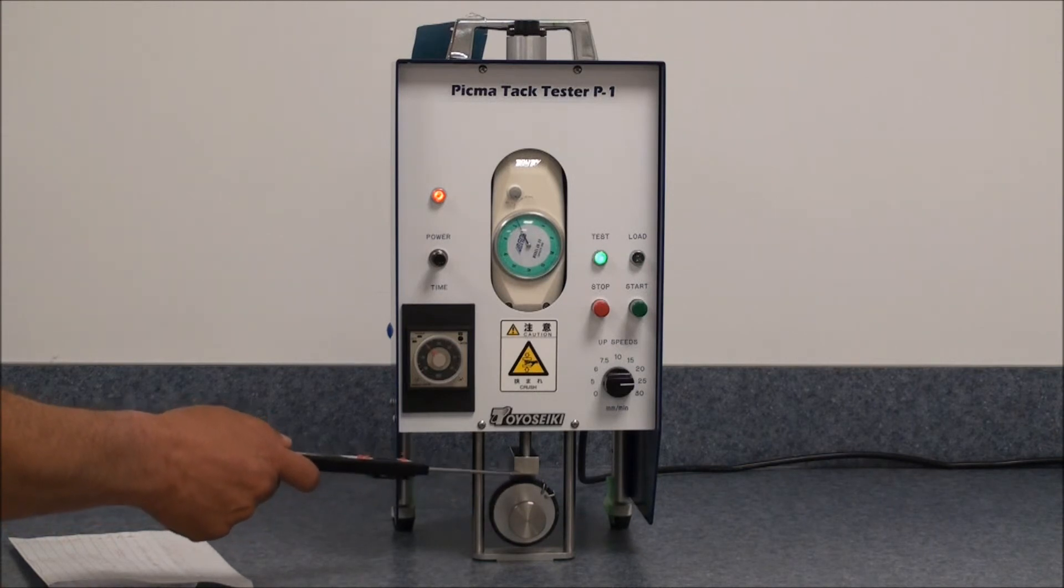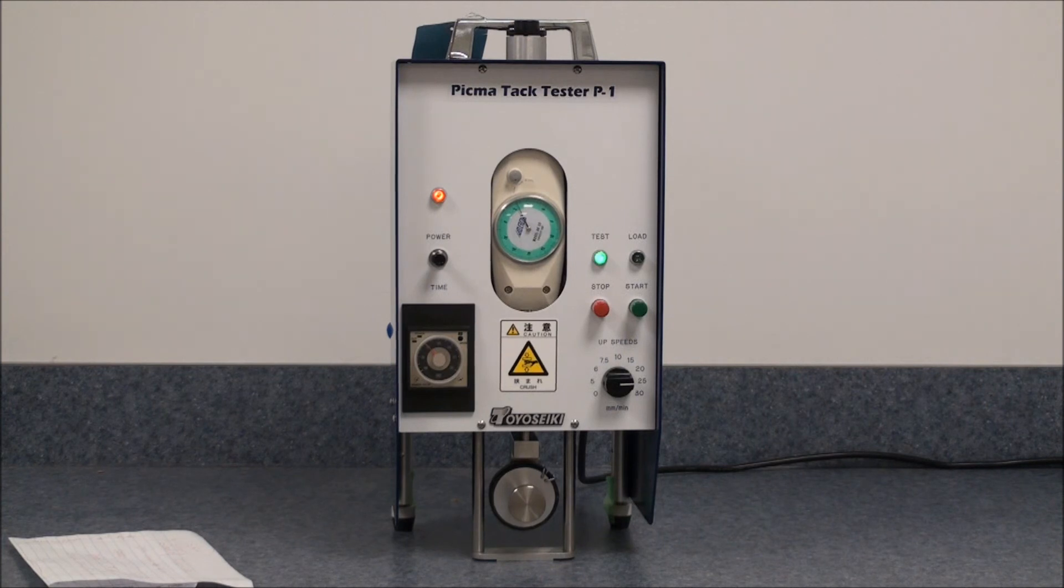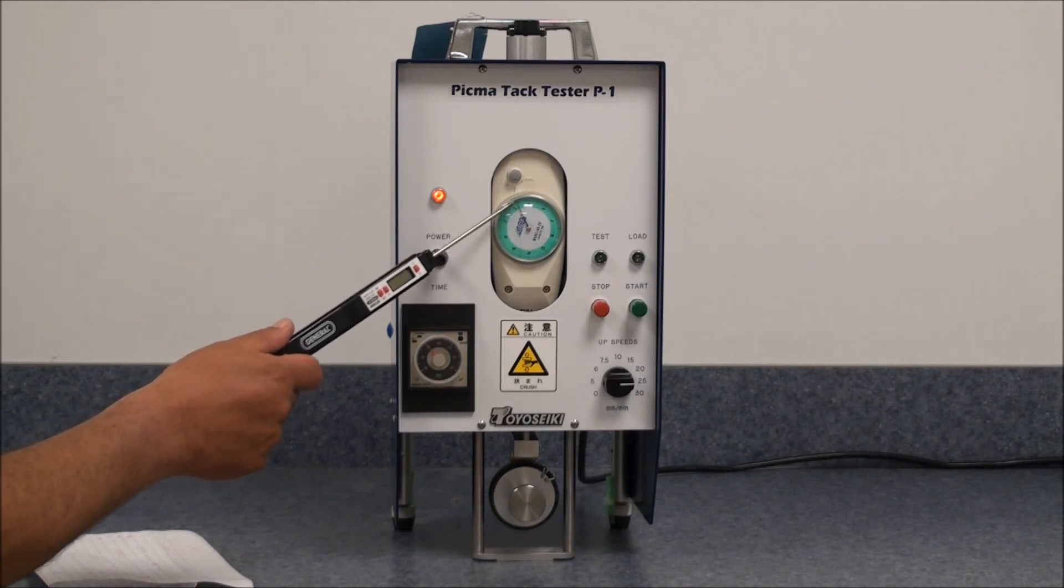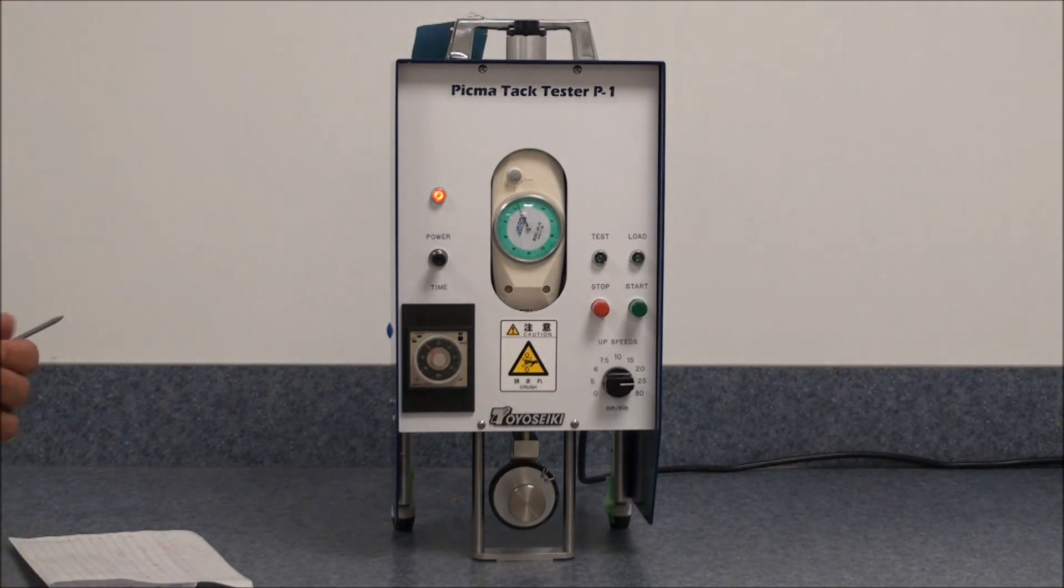The machine will continue to operate until it gets into its upright position. Your test is now complete, and you can take the reading off the dial indicator. And as we see here, it is 2.8 newtons.